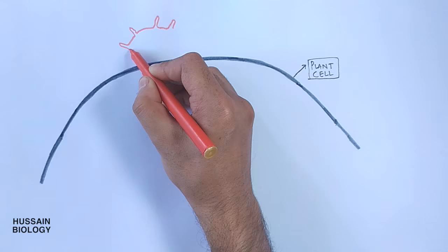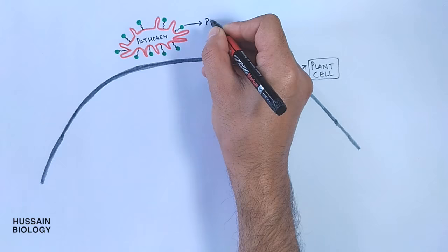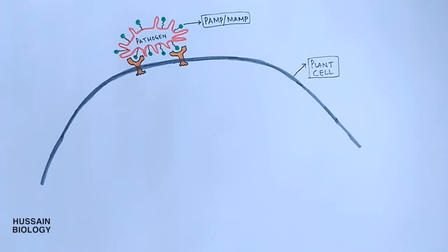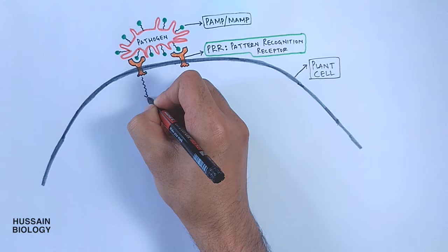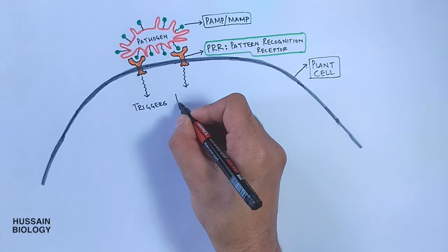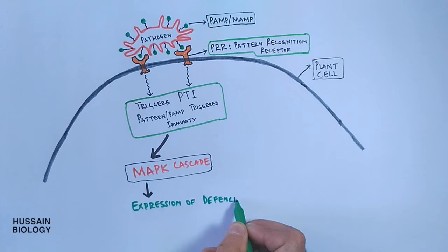In this diagram, we have a plant cell being encountered by a pathogen. On the pathogen, it has small molecules called PAMP or MAMP, while the plant cell has PRR molecules. These PRR molecules bind to the PAMP molecules of the pathogen. After PRR recognizes and receives the PAMP molecule, the signal is mediated, which triggers PTI — that's pattern or PAMP-triggered immunity — and furthermore this PTI initiates the MAPK cascade, which will eventually activate the expression of defense genes in the plant cell.